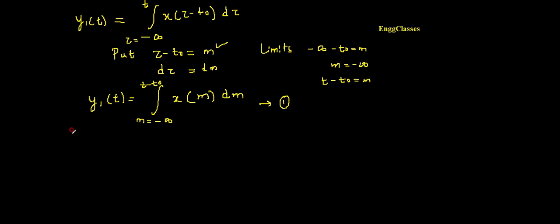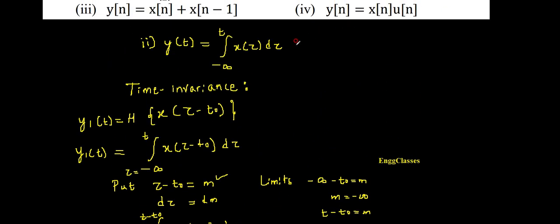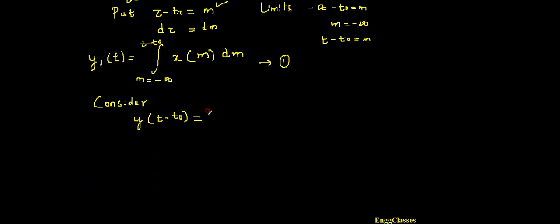Now to consider the second half of the statement, I consider a shift in the output. The shifted output is y(t - t0). I already have the expression for y(t), so to get y(t - t0) I replace every t with t - t0. The only t in the expression is at the upper limit, which gets replaced with t - t0. Therefore y(t - t0) = integration from minus infinity to (t - t0) of x(τ) dτ. I would call this equation number 2.